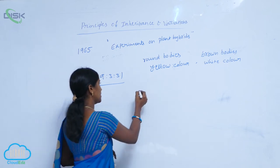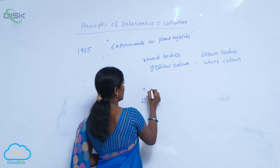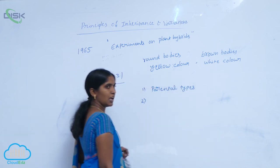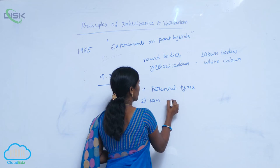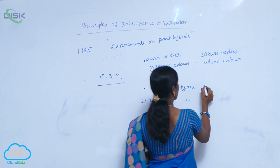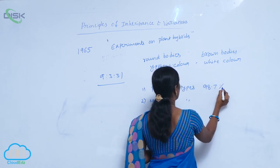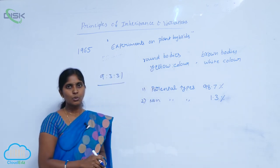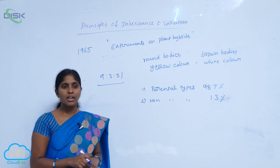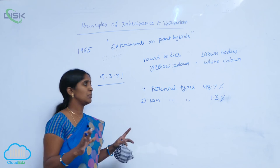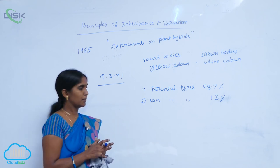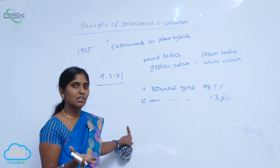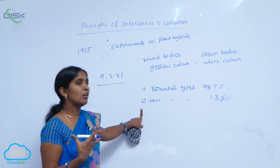Morgan observed two types of progeny. One type was very similar to the parents, called parental type progeny. The other type was non-parental type. Out of 100% of progeny, 98.7% belonged to the parental type and only 1.3% belonged to the non-parental type. Non-parental types show additional characters — characters not present in the parents — appearing in the progeny.